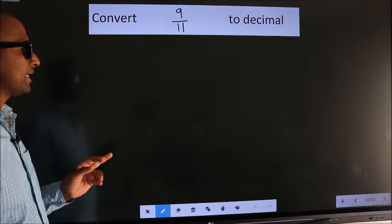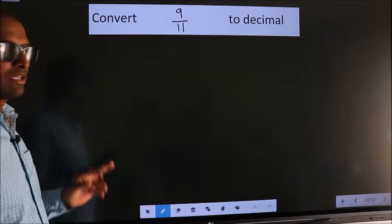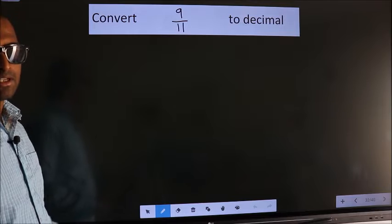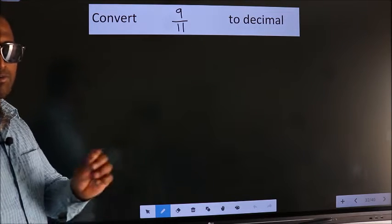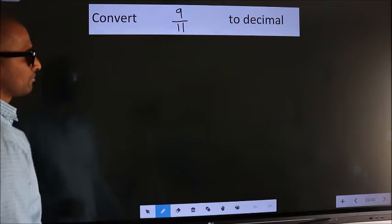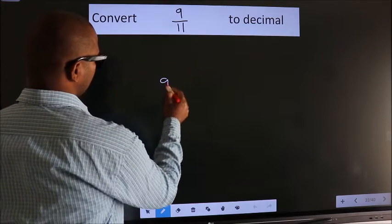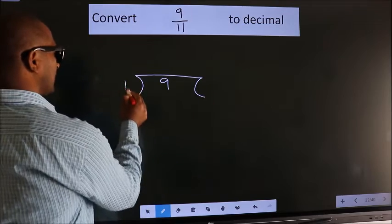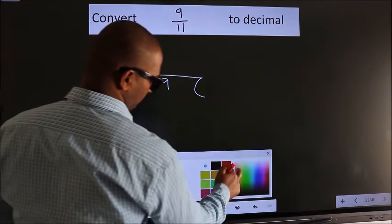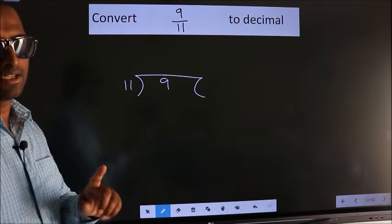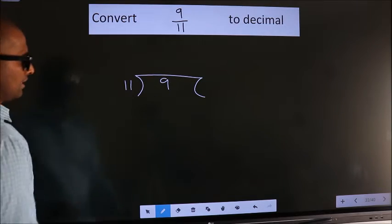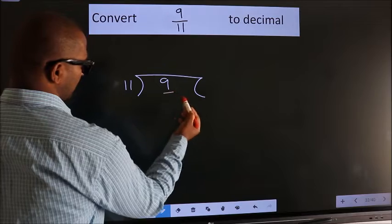Convert 9 by 11 to decimal. To convert this to decimal, we have to divide. And to divide, we should frame it in this way: 9 here, 11 here. This is your step 1. Next, here we have 9, here 11.